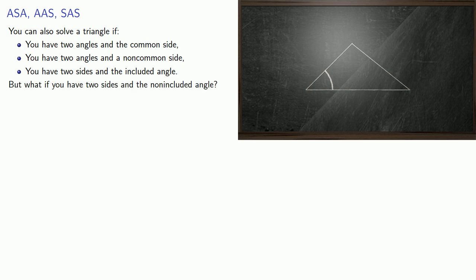But what if you have two sides and the non-included angle? This gives you what's referred to as the side-side-angle case. One way to look at it is the unknown third side makes an angle with the given side, so we'll just extend it and see if we can form a triangle. Several things may happen depending on the lengths of the sides.